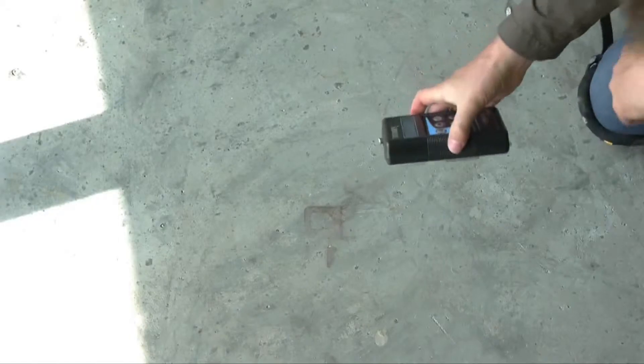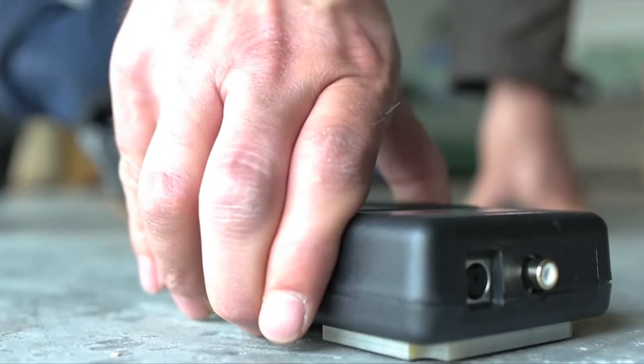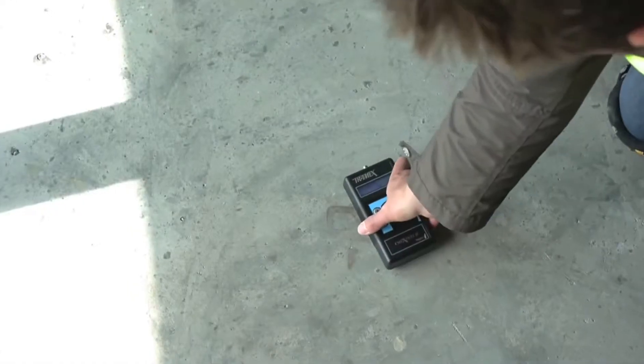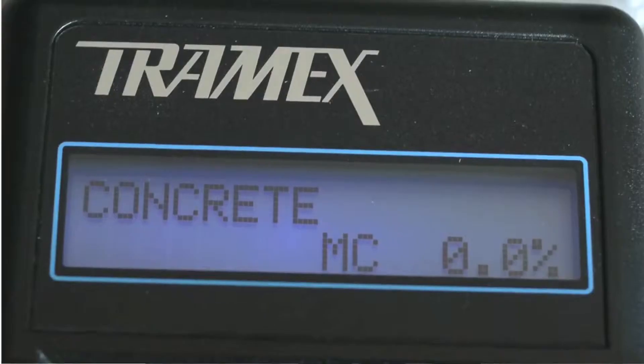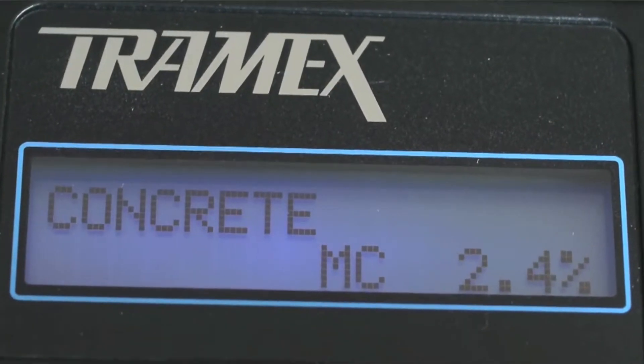Simply turn on the meter, push it onto the surface being tested and read the results on the clear display. The results are calibrated to show percentage moisture content by weight.